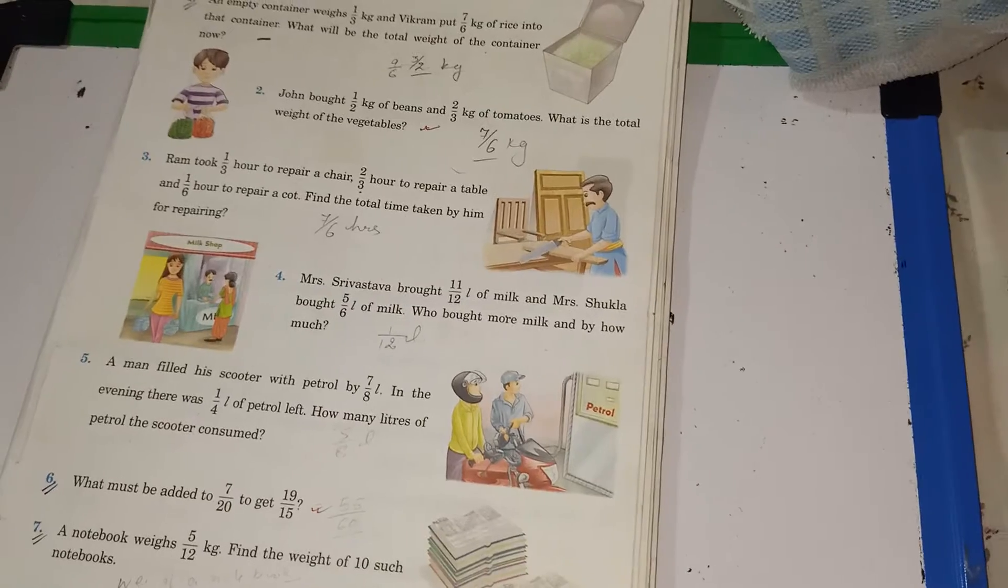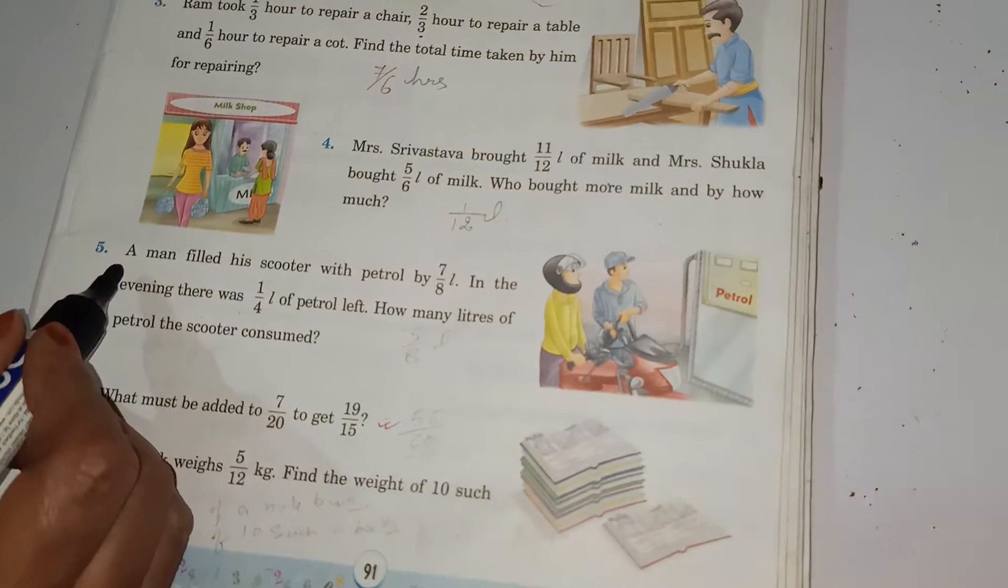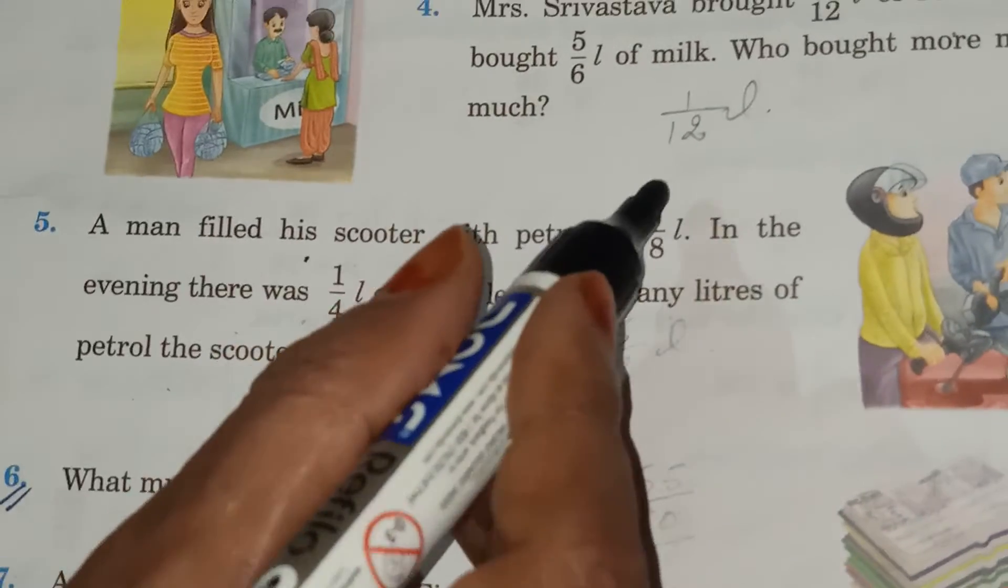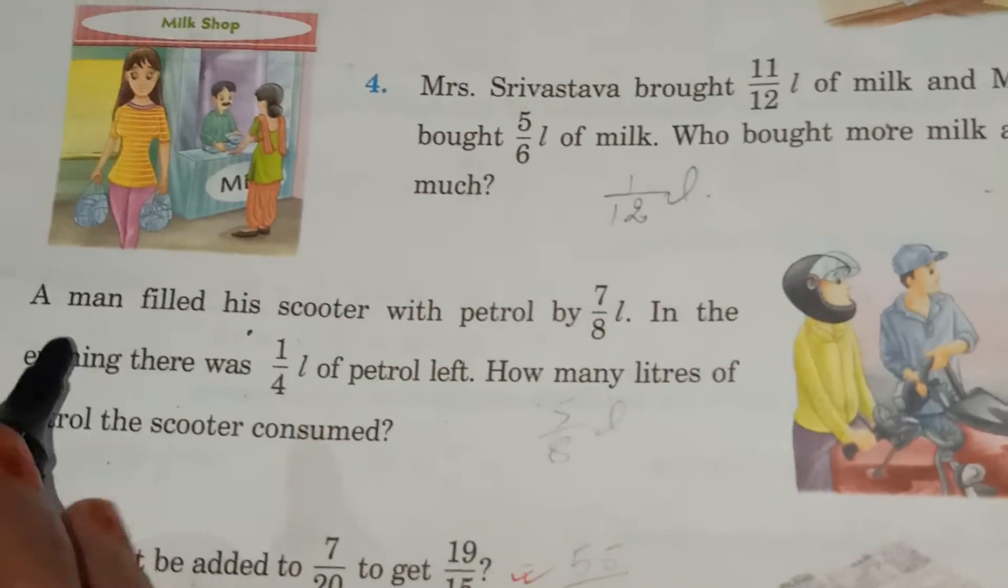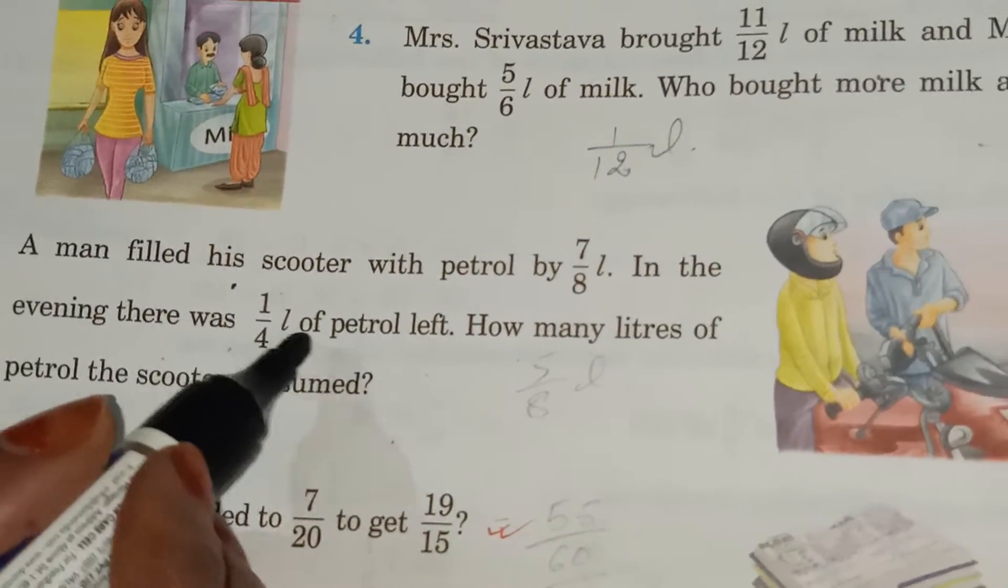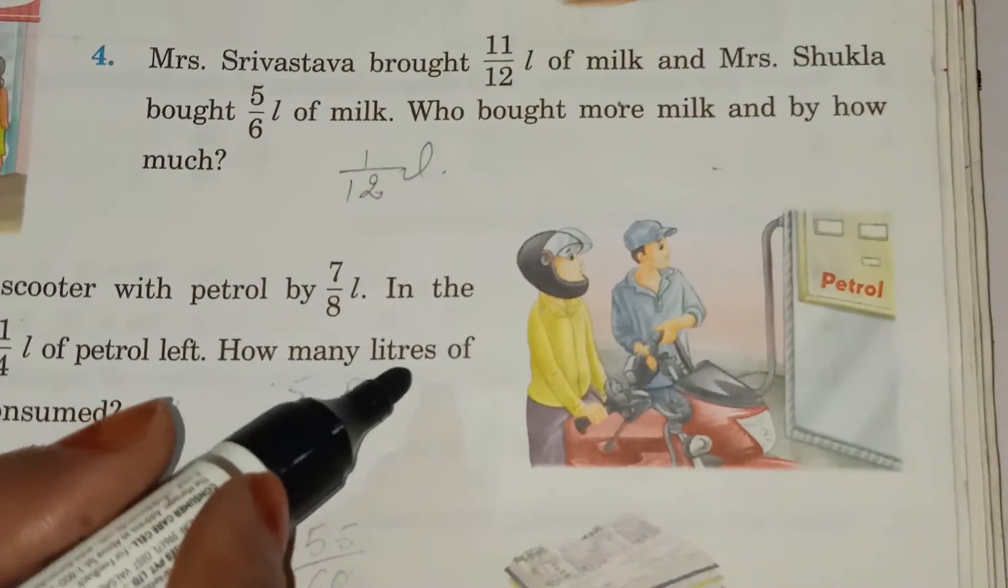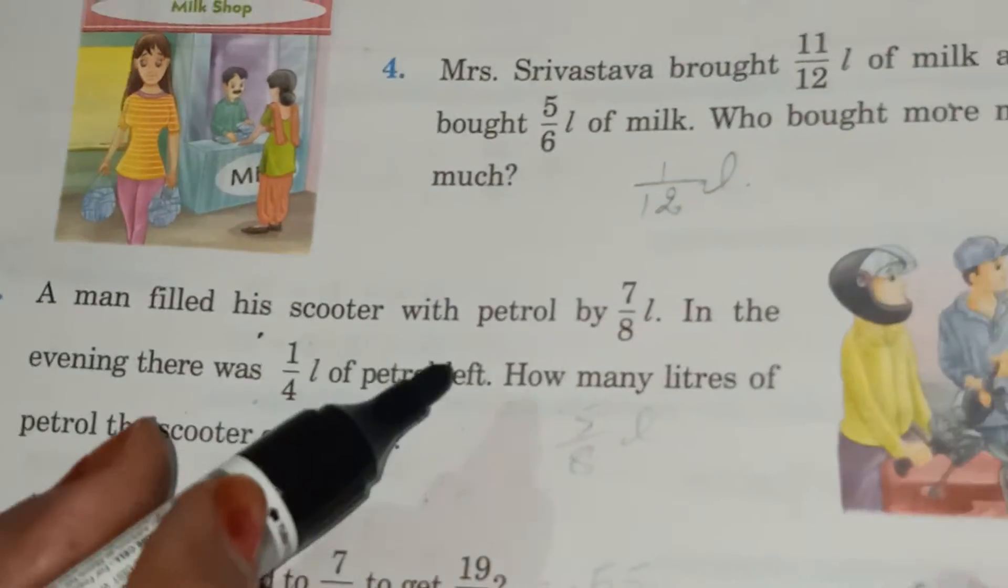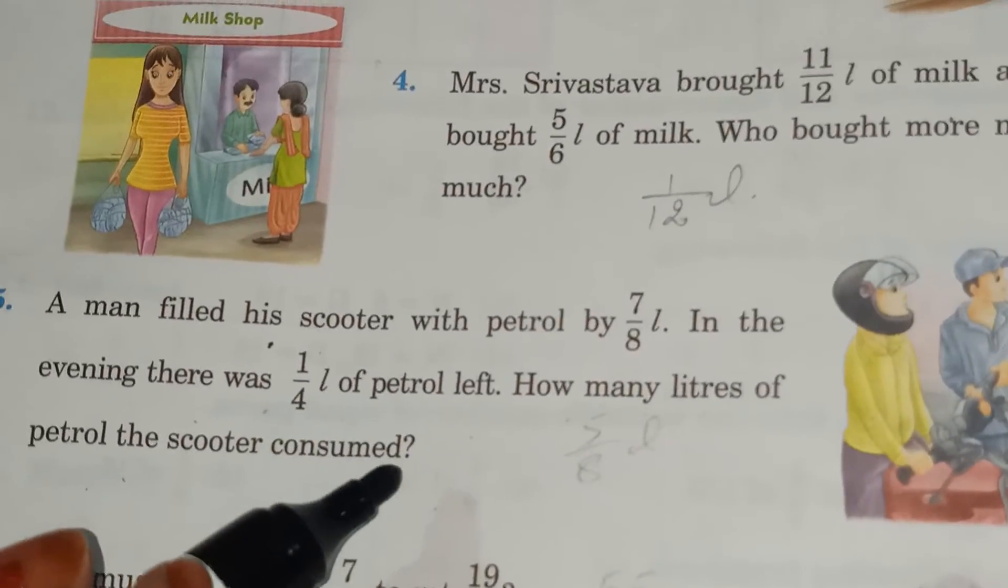So children, look carefully in question number 5. A man filled his scooter with petrol by 7 by 8 litre. In the evening, there was 1 by 4 litre of petrol left. How many litres of petrol the scooter consumed? So by subtraction, you can get the answer.